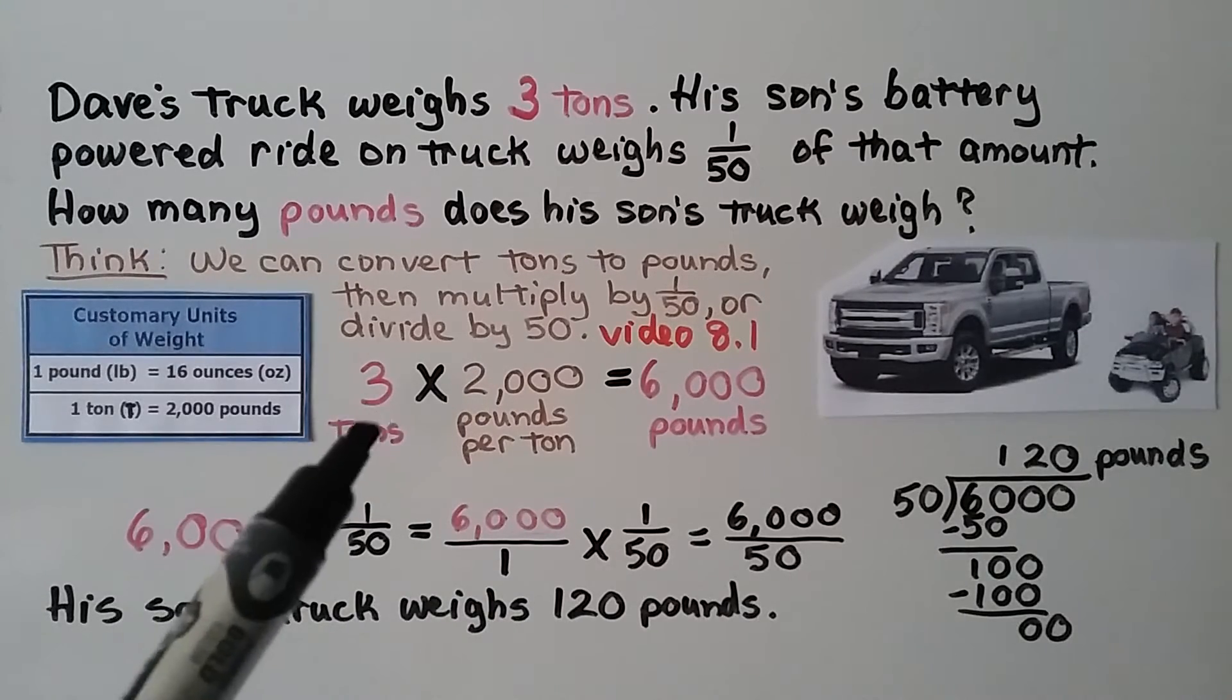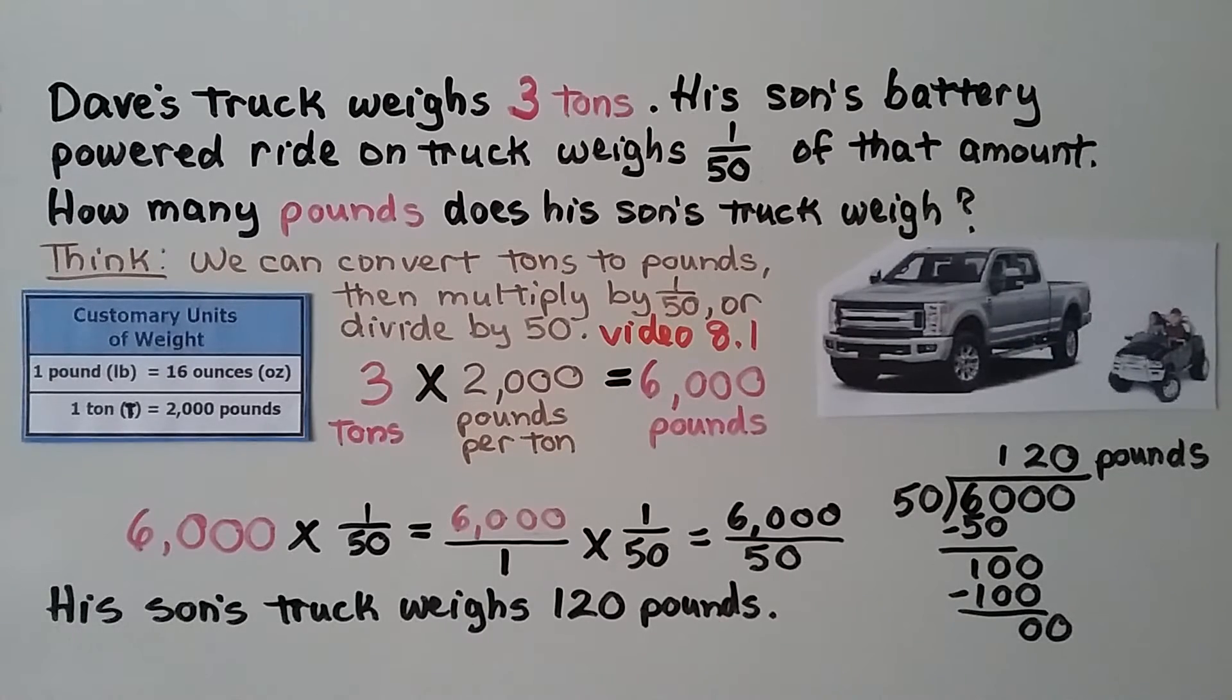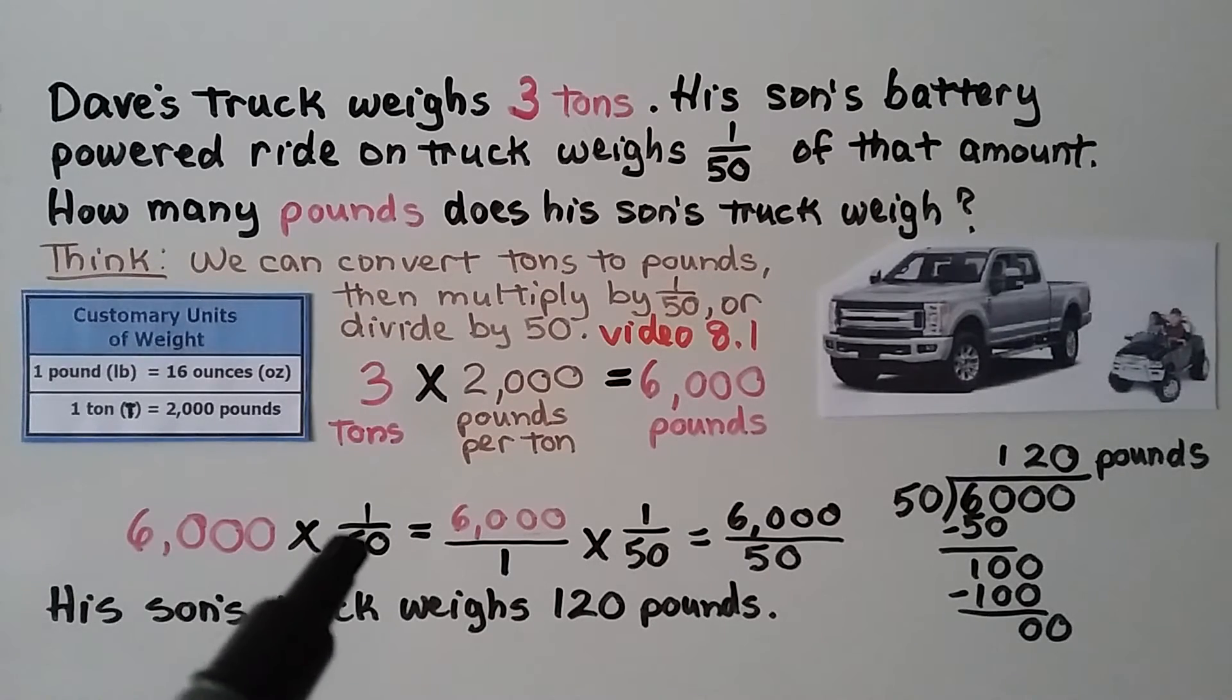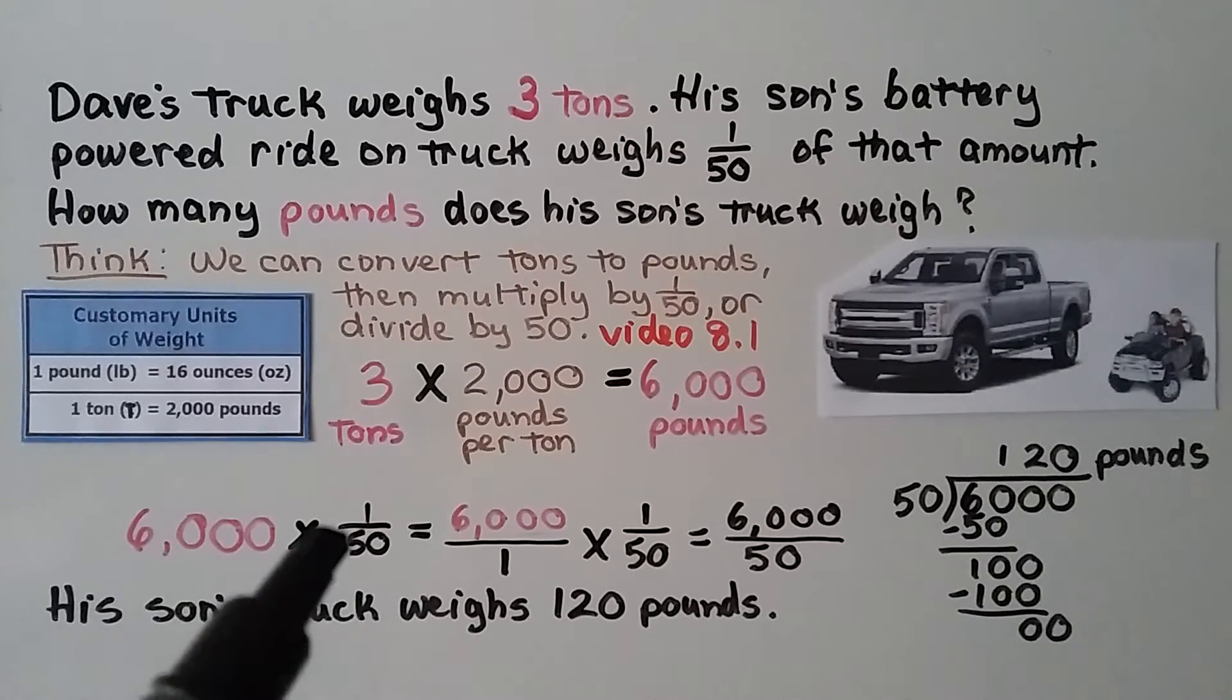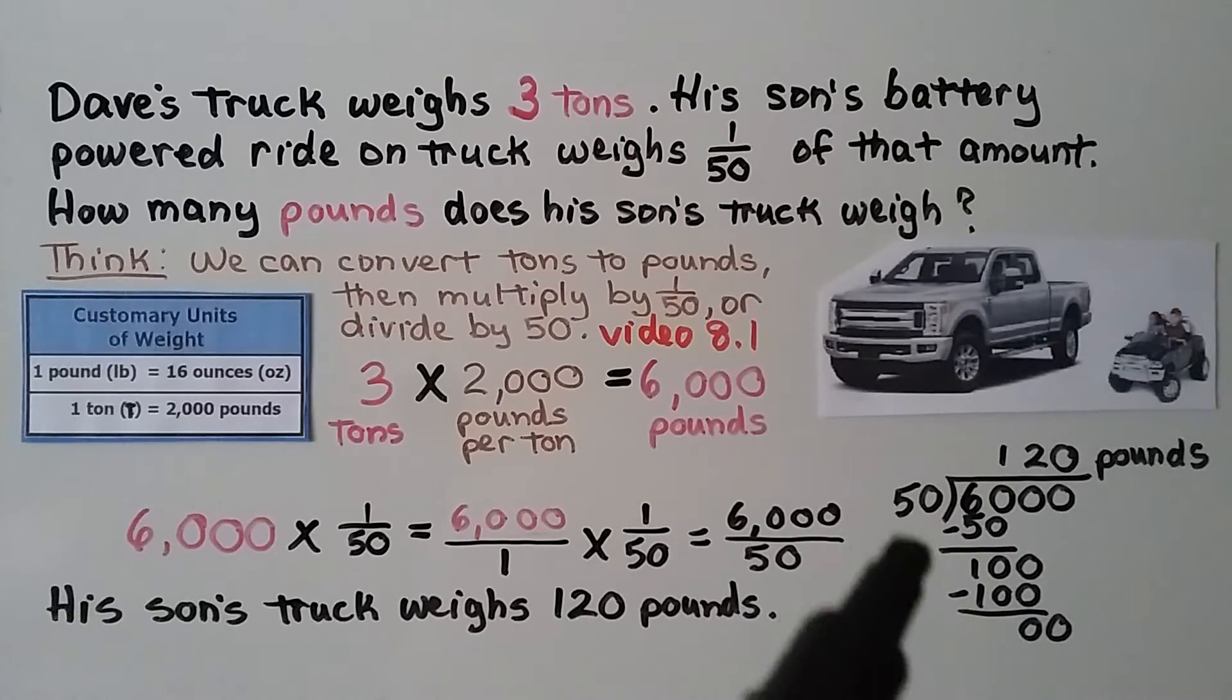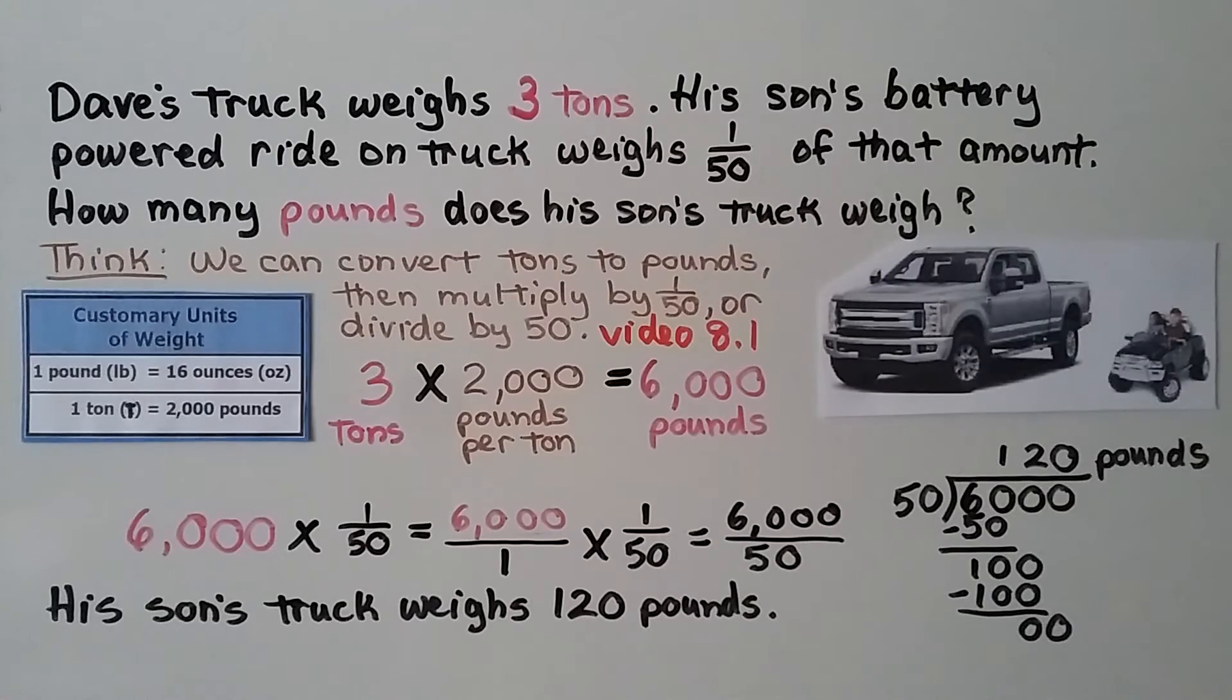We have three tons. There's two thousand pounds per ton. That's six thousand pounds. His truck weighs six thousand pounds. His son's truck is one fiftieth of that. Six thousand times one fiftieth is six thousand fiftieths. And six thousand divided by fifty is one hundred twenty pounds. So his son's truck weighs one hundred twenty pounds.